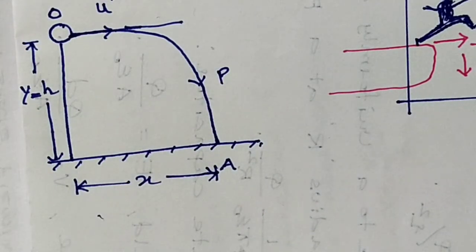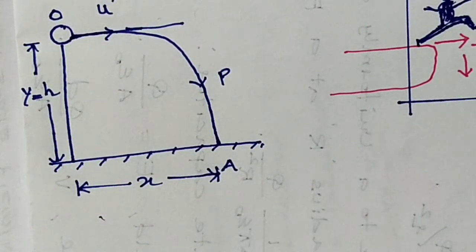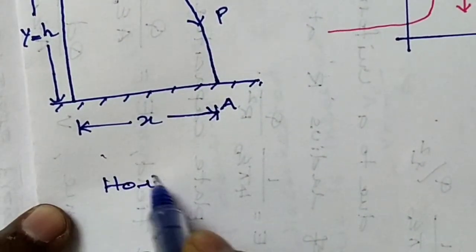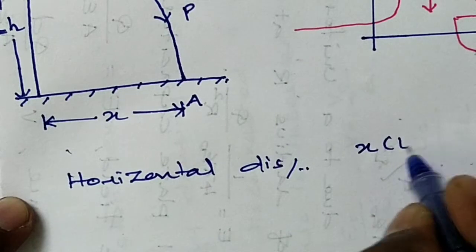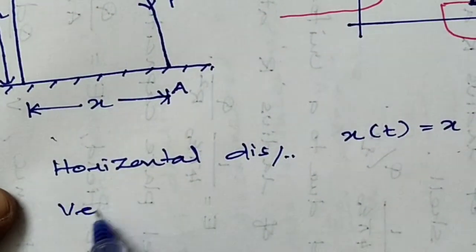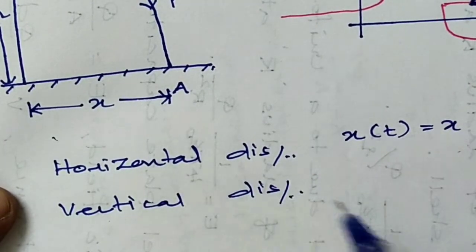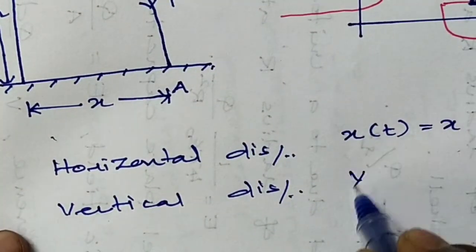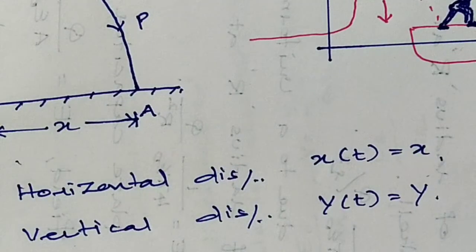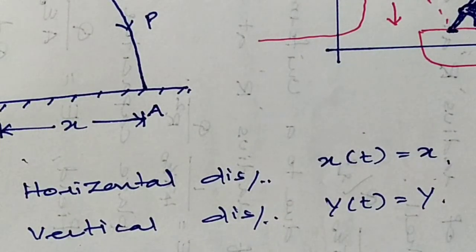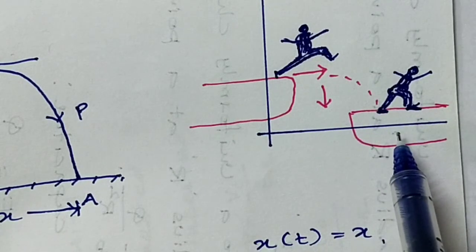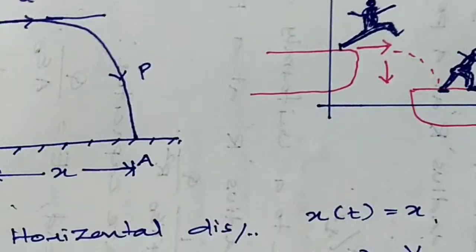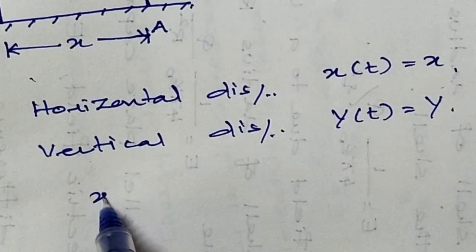The ball takes time t to reach the ground at point A. There are two distances traveled: one is the horizontal distance x(t) and the other is the vertical distance y(t). The horizontal distance is x and the vertical distance is y, forming a two-dimensional plane. We can apply kinematic equations along the x and y directions.